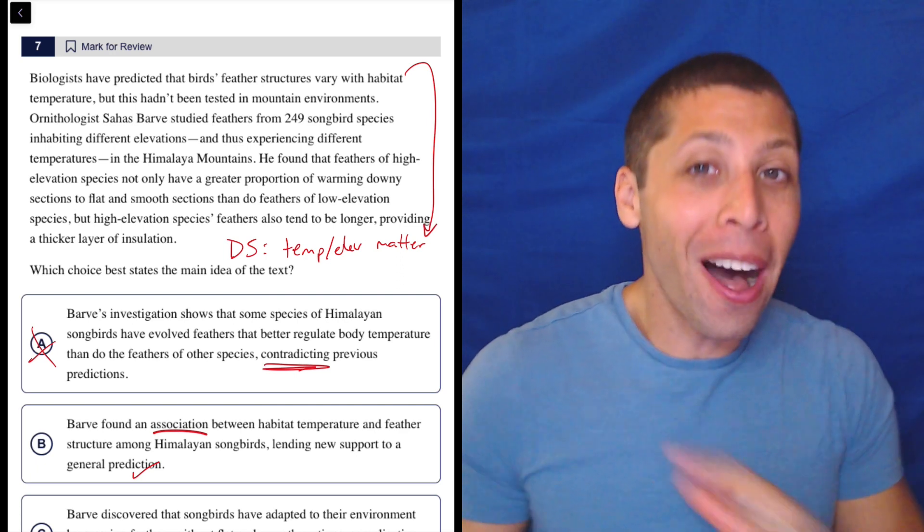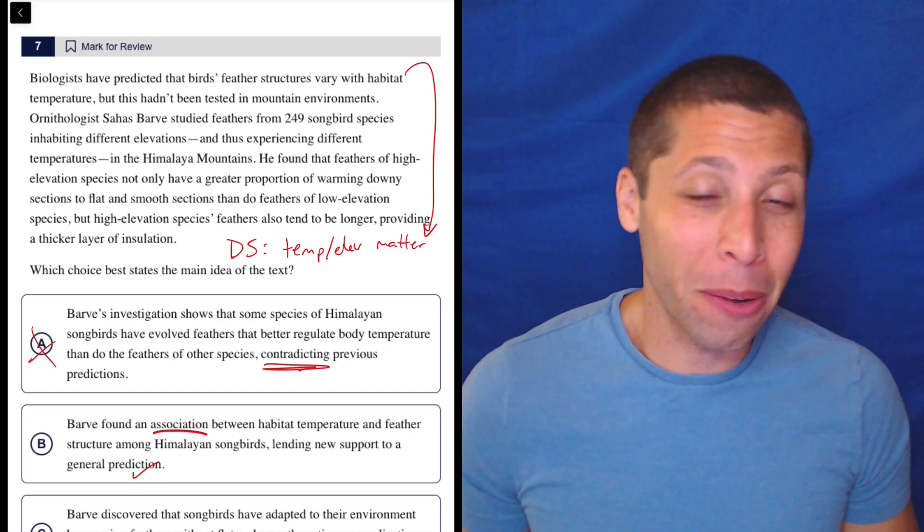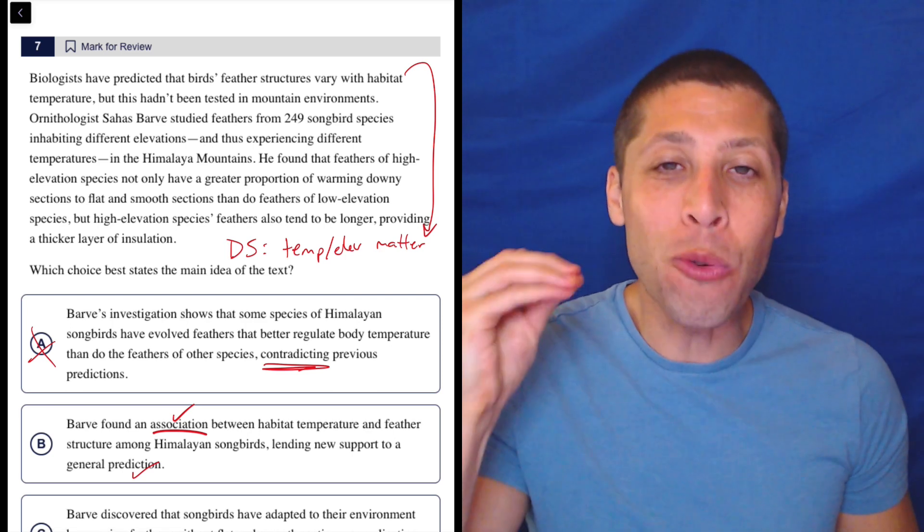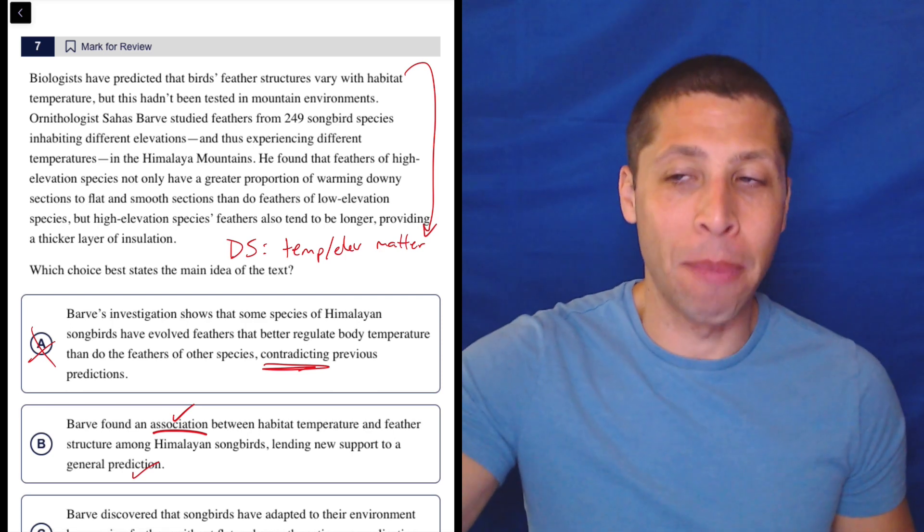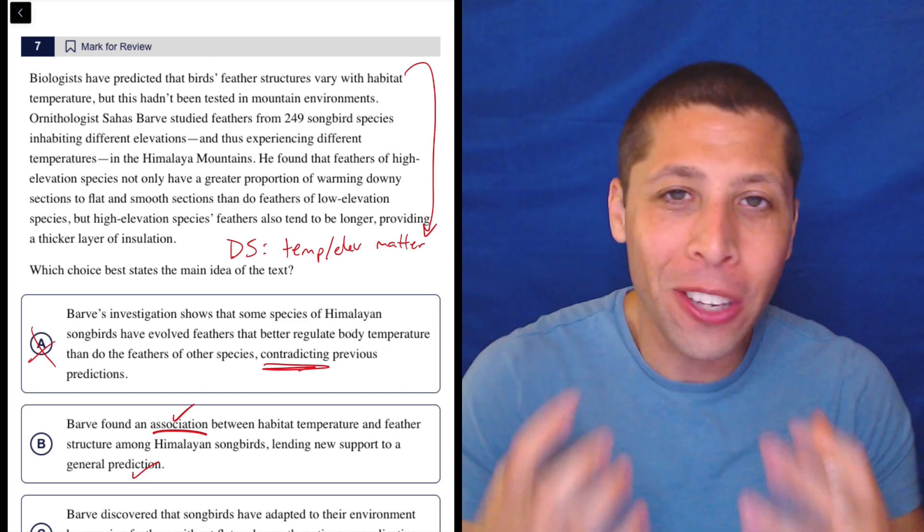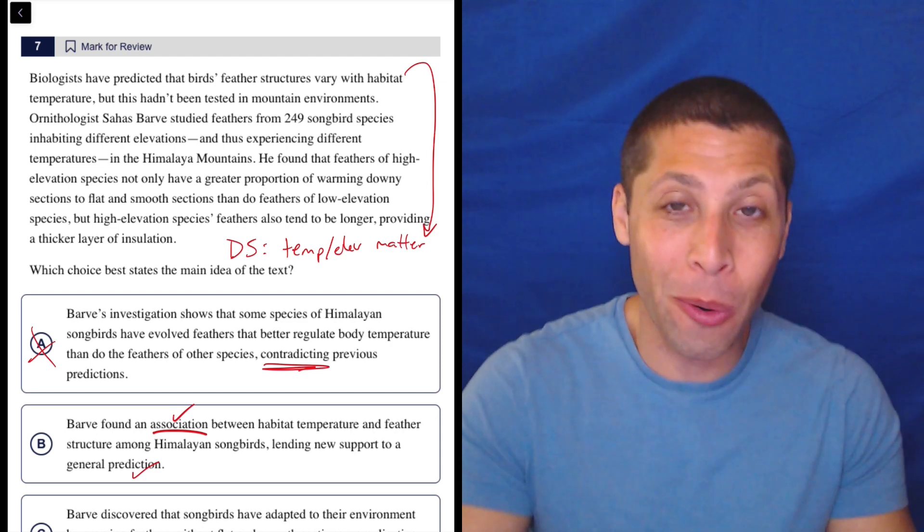And I didn't bother to summarize that relationship because I was like, maybe I won't have to. And it seems like I don't have to. So this is why you can't waste time trying to understand the passage. You might not need all the details. Let the choices tell you what to care about.